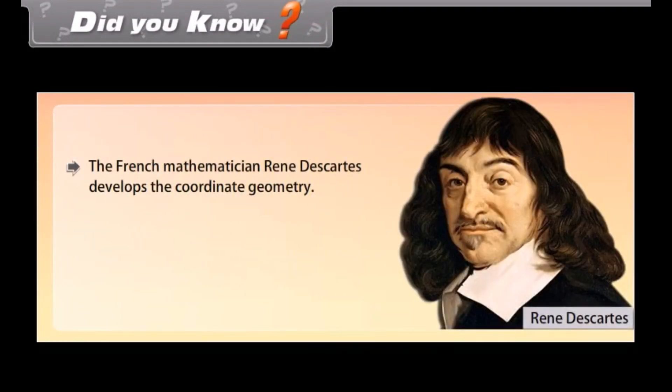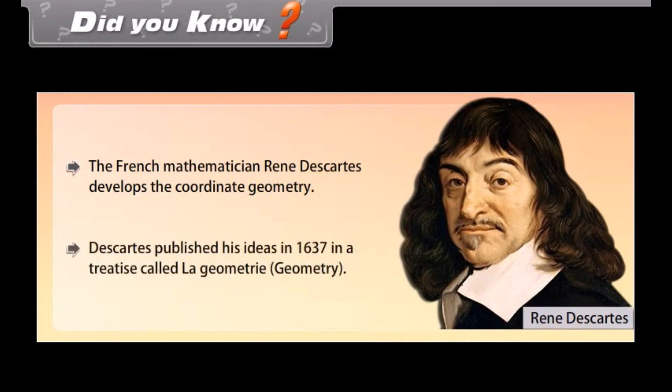Did you know? The French mathematician René Descartes developed coordinate geometry. Descartes published his ideas in 1637 in a treatise called La Géométrie.